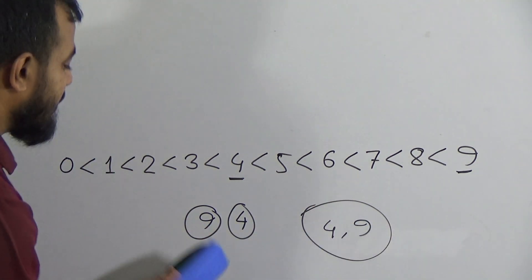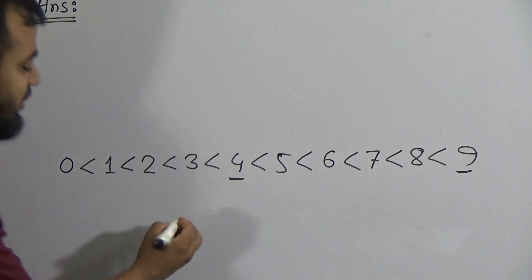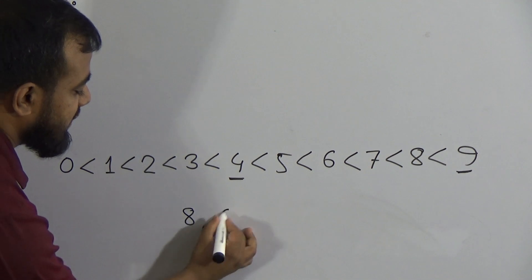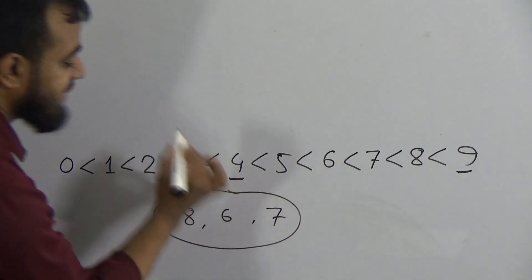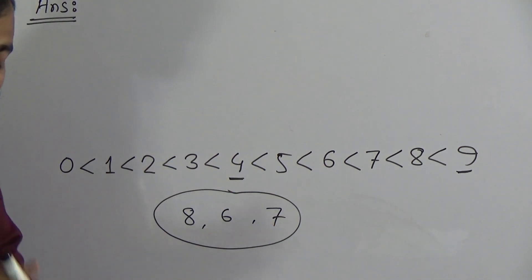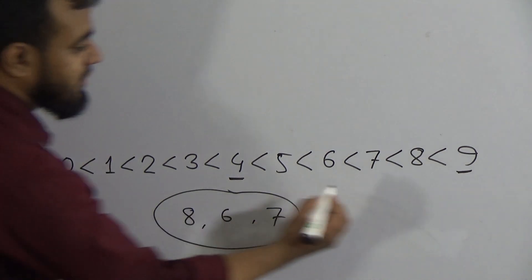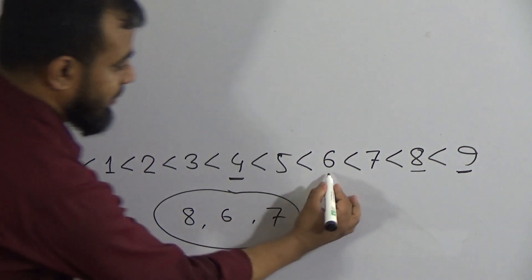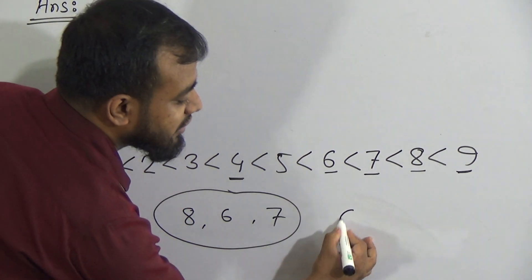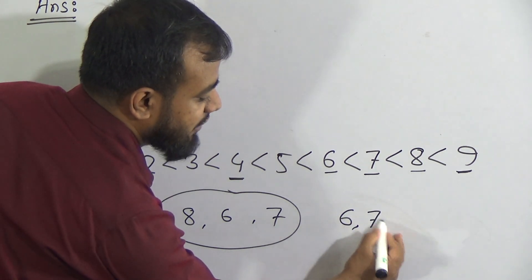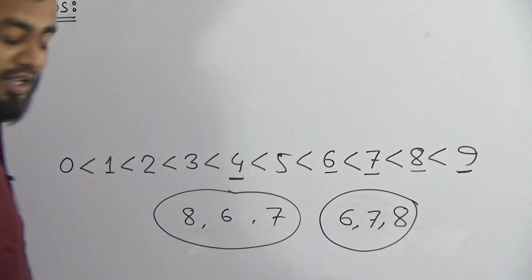Now suppose 3 numbers are given: 8, 6, and 7. The question is to arrange these numbers in ascending order — that means from smaller to greater. So 8, 6, and 7 are given. Which one is the smallest? Yes, 6 is the smallest. So we write 6 first, then we write 7, and then we write 8. This is our arranged number in ascending order.